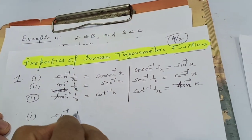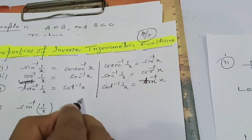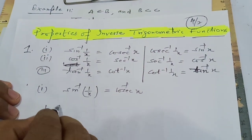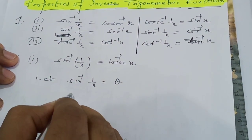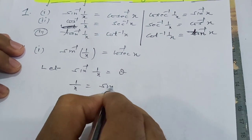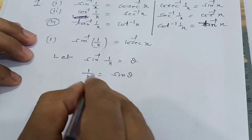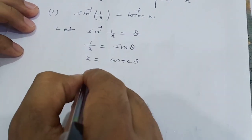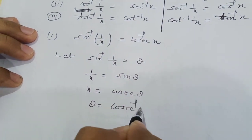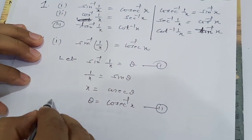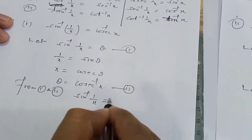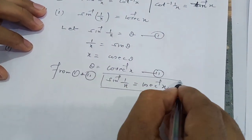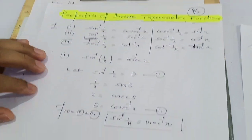Let me verify the first one: sin⁻¹(1/x) = cosec⁻¹(x). Taking the left-hand side, let sin⁻¹(1/x) = θ, so sin θ = 1/x, which means x = 1/sin θ = cosec θ. Therefore θ = cosec⁻¹(x). From both expressions we conclude that sin⁻¹(1/x) = cosec⁻¹(x). The same approach applies for all other properties in this group.